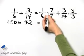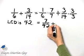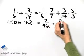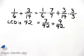Let's multiply. 1 times 7 is 7 over 6 times 7 is 42 plus 3 times 3 is 9 over 14 times 3 is 42, just like I want.